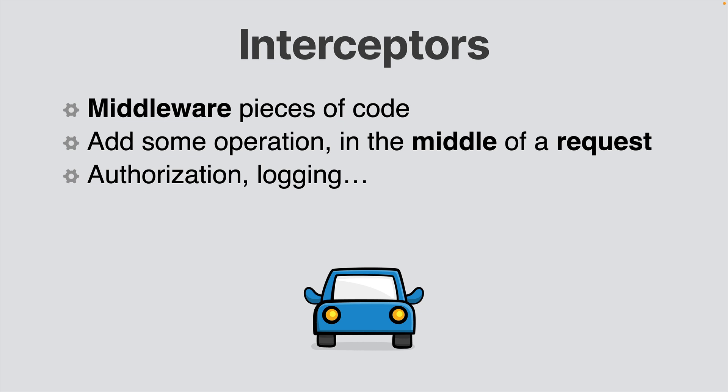Interceptors are mechanisms that you add to requests that intercept every request and perform extra behavior before proceeding with it. In this part, you will learn how to add logging interceptors, which print out information about requests for you to analyze, authentication interceptors, which add authentication tokens before each required request, and much more.